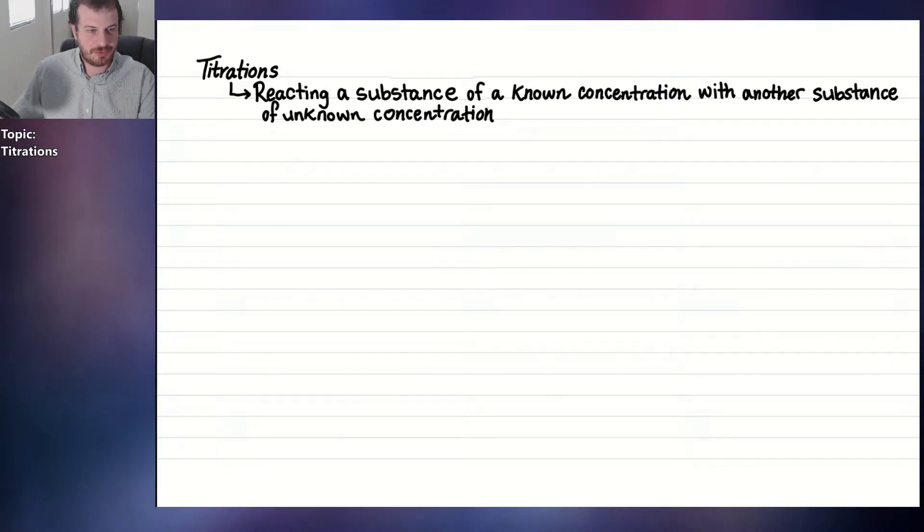Today's mini lesson is on the topic of titrations. You probably heard this word before, maybe in one of your chemistry classes in high school. A titration is a fancy word for just a reaction. It is reacting a substance of a known concentration with another substance of an unknown concentration. The goal is to calculate the unknown concentration.